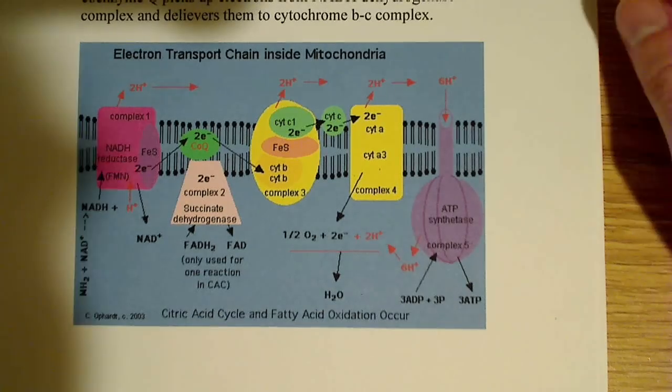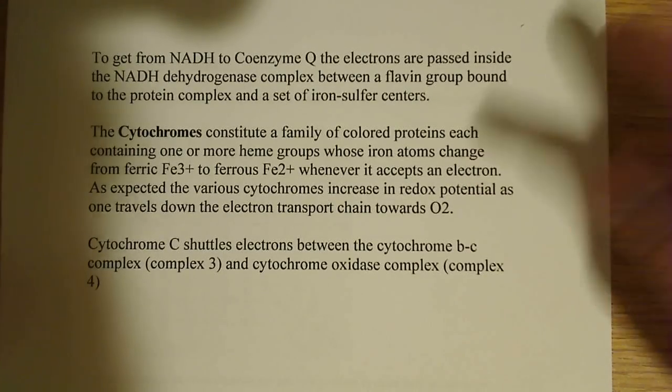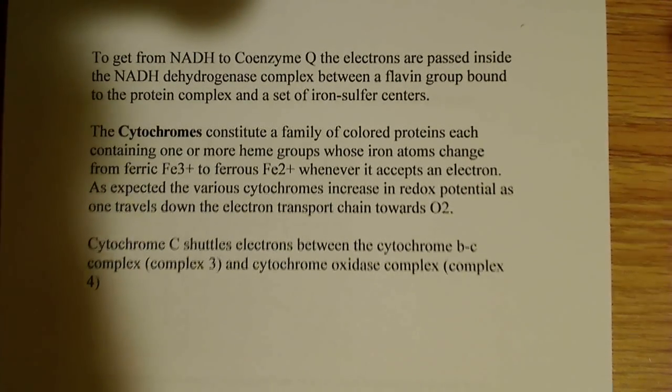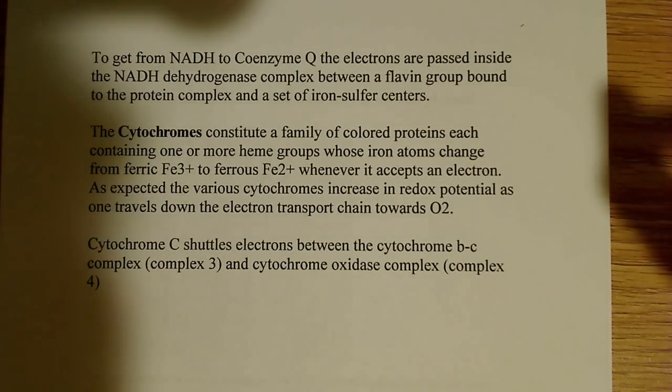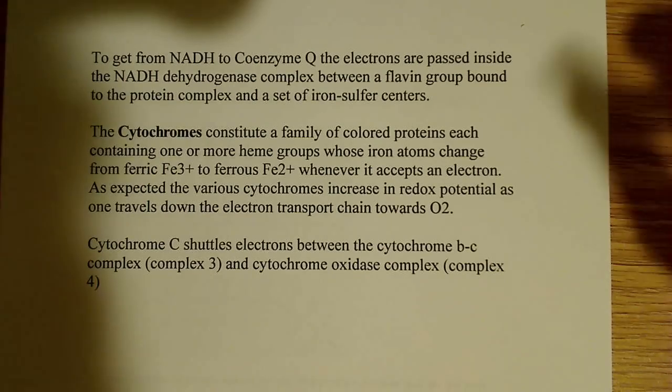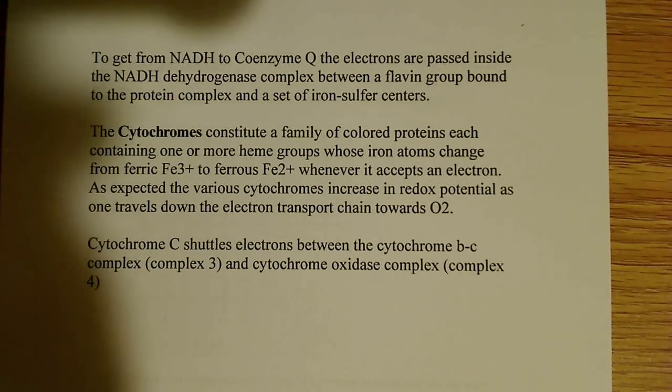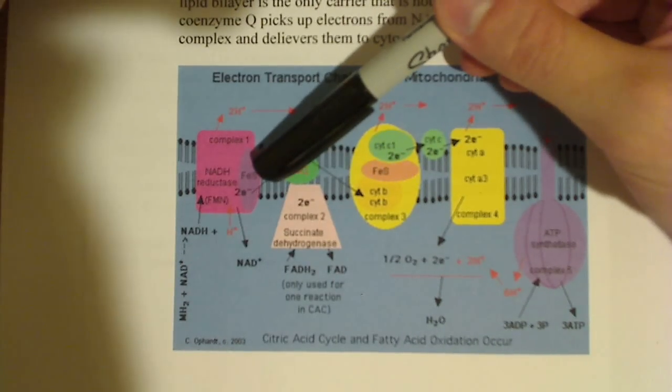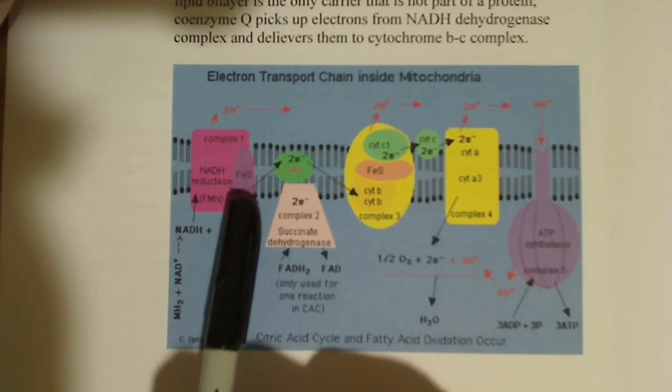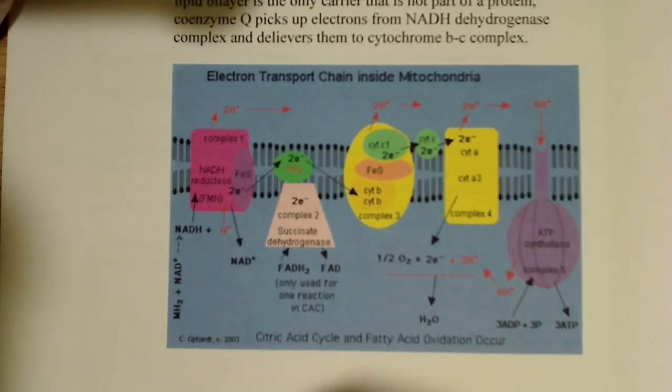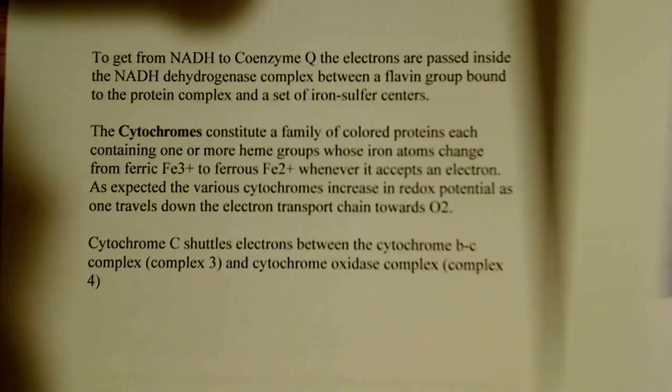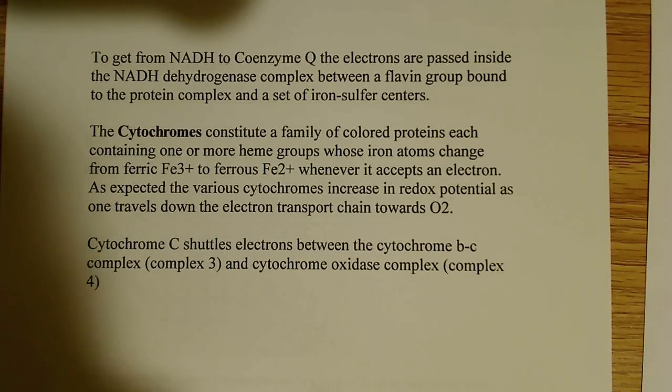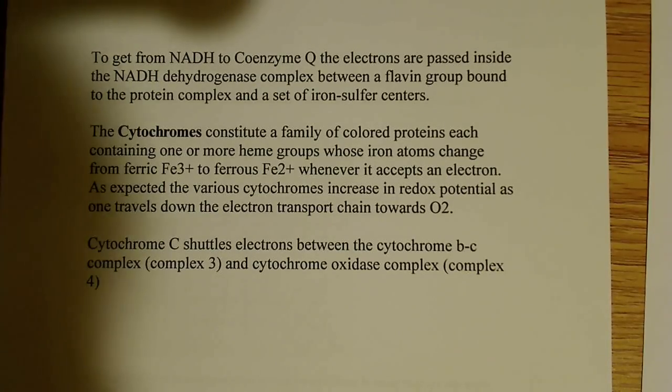To get from NADH to coenzyme Q, the electrons are passed inside the NADH dehydrogenase complex between a flavin group bound to a protein complex and a set of iron sulfur centers. You can see this is iron sulfur FES, so when the electrons get in here, they go to the FES molecule, and then they transfer eventually to coenzyme Q, but first to a flavin group bound to a protein complex.